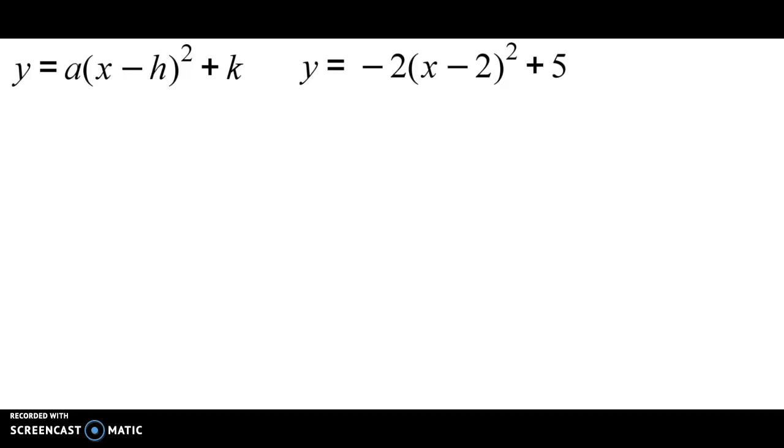I had a question about vertex form of a parabola, so I want to take a look here. My first equation, y equals a(x minus h) to the second power plus k, is the equation of a parabola in vertex form, which means the vertex is in the equation already and that comes from h and k.